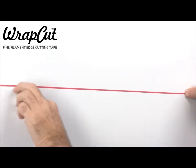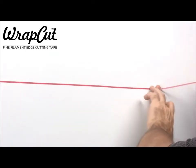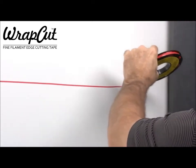This short video demonstrates the ease and simplicity of using wrap-cut fine filament tape to produce clean, precise trim lines through many types of vinyl film.